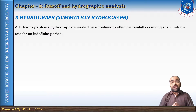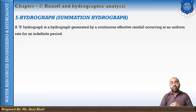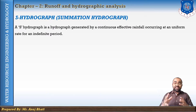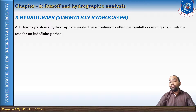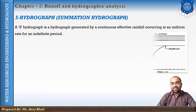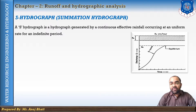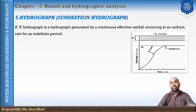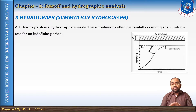The S-hydrograph is generated by a continuous effective rainfall occurring at a uniform rate for an indefinite period. This graph is known as the S-hydrograph because the shape of the hydrograph comes out like the alphabet S. As you can see in this figure, the graph is in a slightly S-shape, and that's why this summation hydrograph is also known as the S-hydrograph.